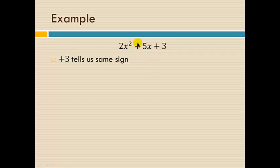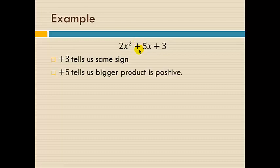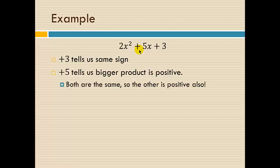The middle term being positive tells us that the bigger product is positive. In fact, since both signs are the same, both of them are positive. The other sign is also positive. So as I set up my factors to fill in, we can put the pluses in, and now we just have to figure out what numbers go where. Turns out this problem is 2x plus 3 times x plus 1.